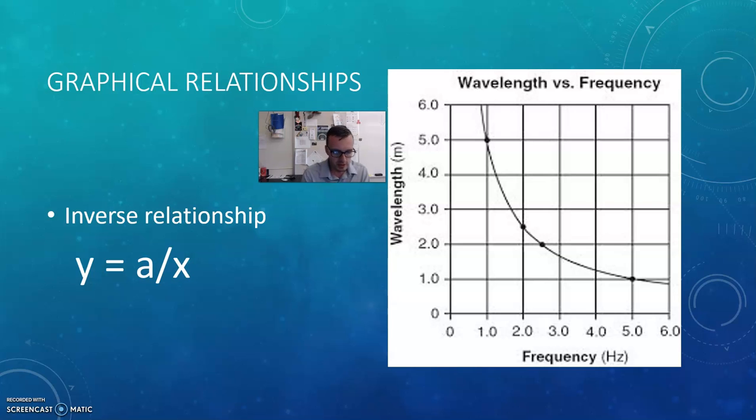The other one is an inverse relationship, so we see y equals a, some coefficient, divided by x. That just means that as one thing goes up the other goes down. Another way to write this would be y equals a over x. If I divide by a larger number, if I make that number larger and larger and larger, what happens when you divide by something really large? You get something really small on the other side.